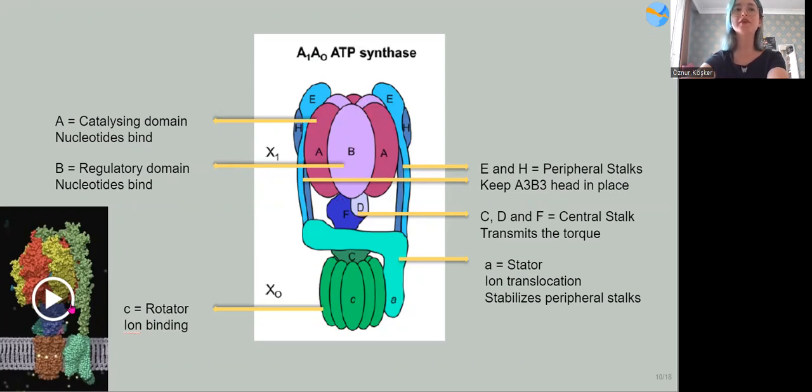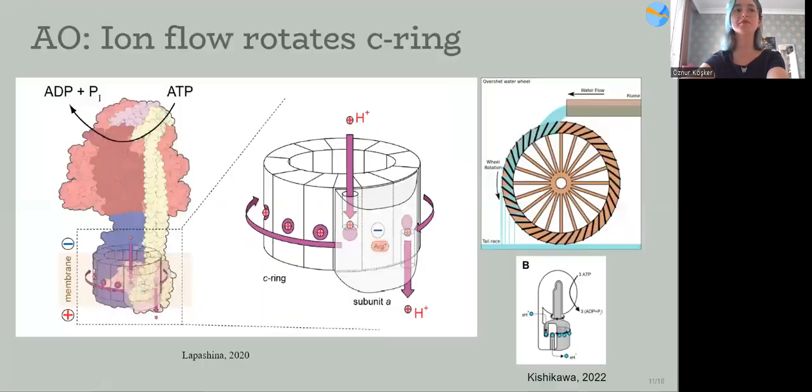Now we are looking closer to the membrane embedded part here. ATP synthase can rotate due to the architecture of this ring. And the rotation is coupled to ion flow. As in the case of a water wheel here, instead of water, ions drive the rotation in ATP synthase. And movement of protons is performed by these two subunits, C and A.